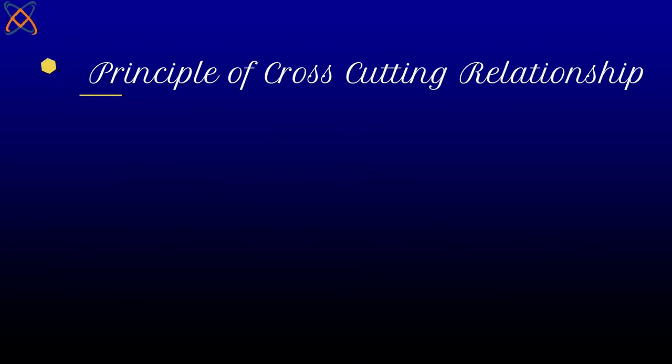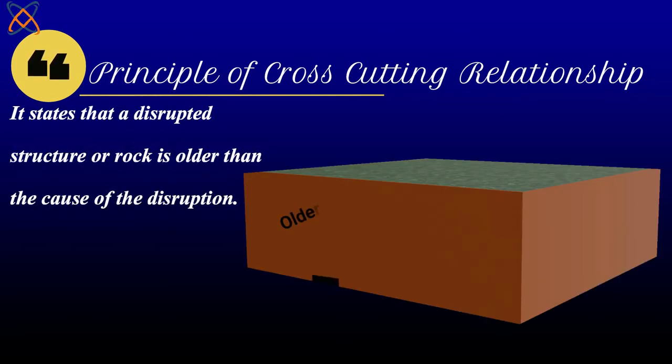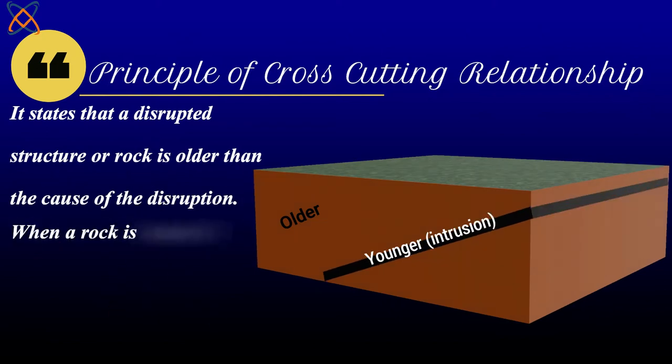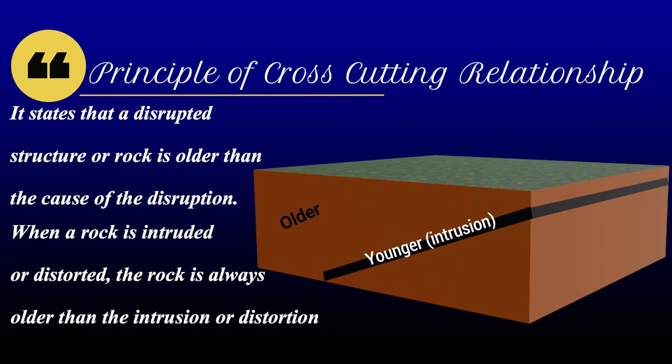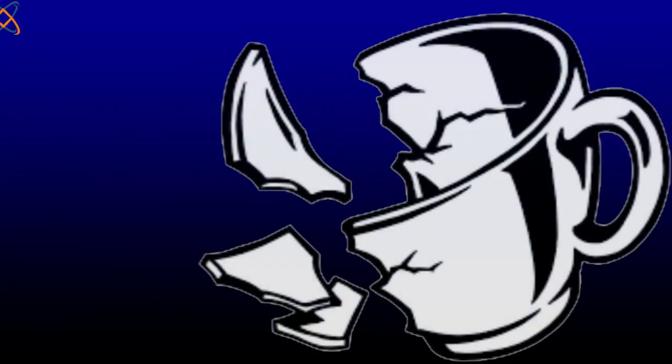Now to the business of this tutorial, the principle of cross-cutting relationship. The principle states that a destructive structure or rock is older than the cause of the destruction. The principle can be stated in different ways, but the basic thing the principle is saying is that when a rock is intruded or distorted, the rock is always older than the intrusion or distortion.